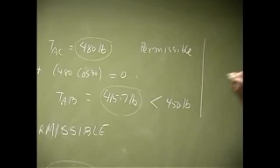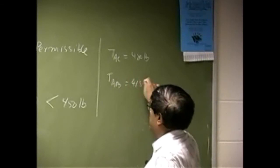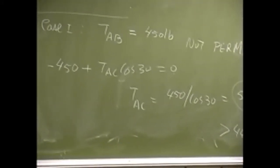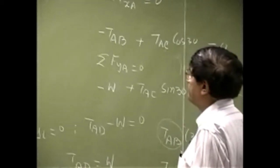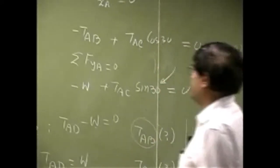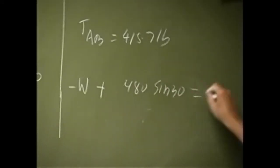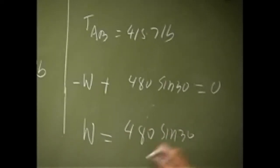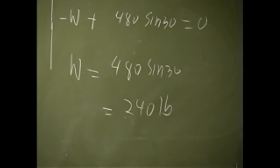So in Case 2: TAC is 480 pounds and TAB is 415.7 pounds. We go back and use the second equation to find W: negative W plus 480 times sine 30 equals 0, so W equals 480 sine 30, which is 240 pounds. That's the maximum weight the engine can have in this problem.